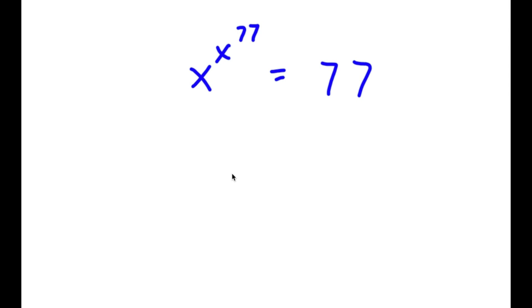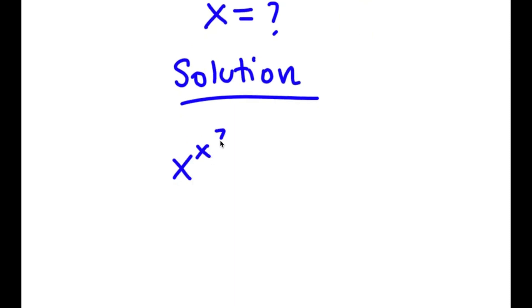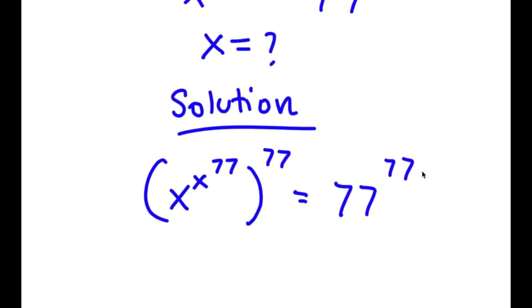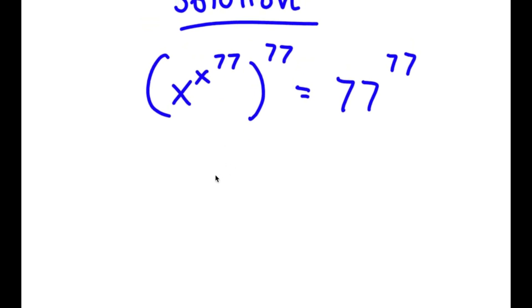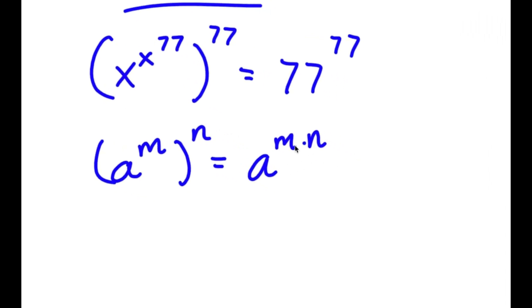In this problem, I have x to the power of x to the power of 77 is equal to 77. To find x, I'm going to take the power of 77 on both sides. So now I have x to the power of x to the power of 77, to the power of 77, equals 77 to the power of 77. Using the same exponent rule — a to the power of m to the power of n equals a to the power of n to the power of m — I can switch the exponent order.